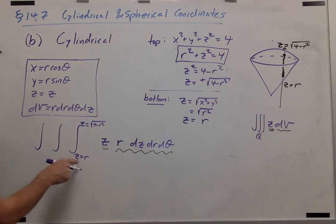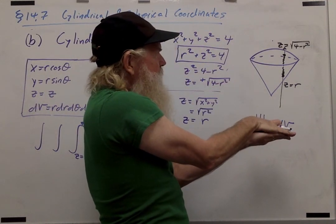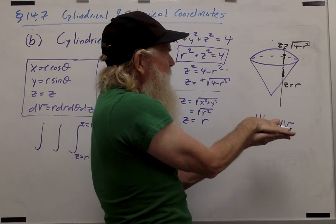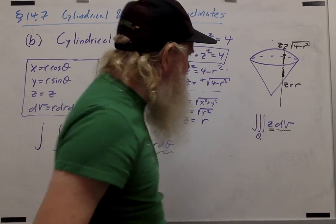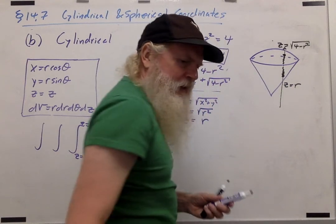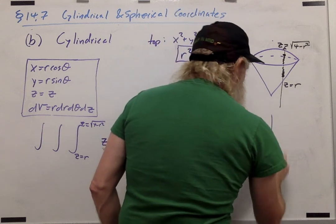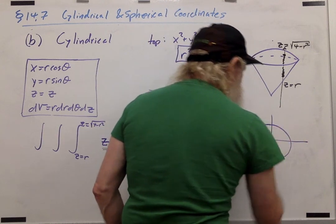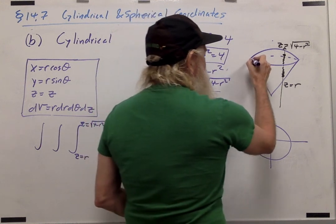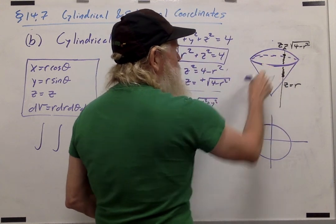Okay, so those are the bounds for z. Now we need to take the solid and project it along that line, so project it down along the z-axis, and then set up the bounds using r and theta. Let's think about what this looks like from above. If you look at this coming from above, what you're going to see is the circle, this circle right here, where the sphere intersects the cone.